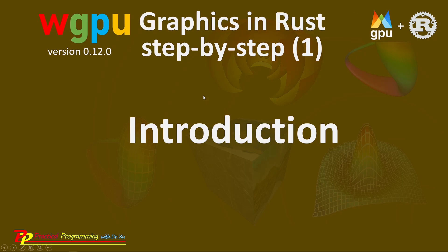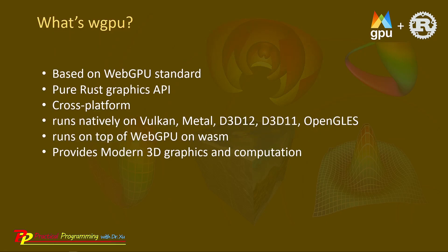So what is WGPU? WGPU is a Rust implementation of the WebGPU API, while WebGPU is a specification created by the GPU for the Web community group. It is a next-generation graphics API and a future web standard for graphics and compute. WGPU is written in Rust, so it's a pure Rust graphics API. It is a cross-platform API which works on Windows, Linux, and Mac operating systems.